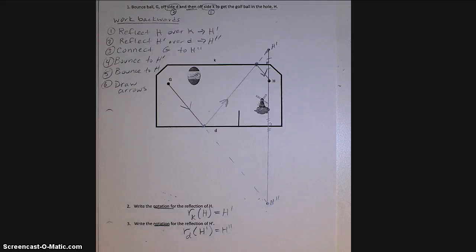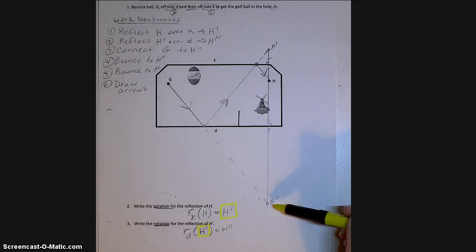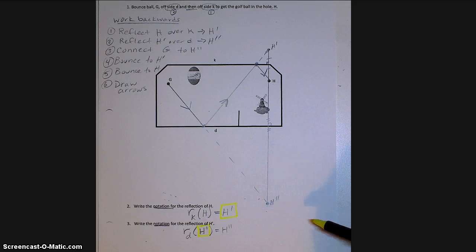Now I want to look at these two notations. And do we notice anything similar between them? Well, they both have an R, that's because they're both reflections, but they also both have an H prime. And that's because H prime is the reflection of H, but then we also used H prime to get H double prime. So we want to think of a way that we could use both of these notations to write one big notation.